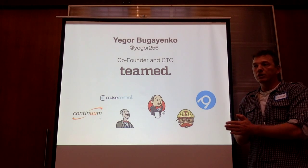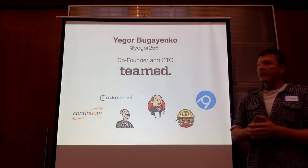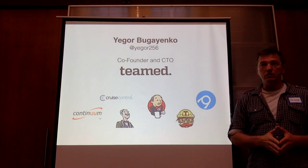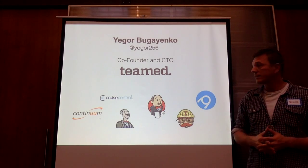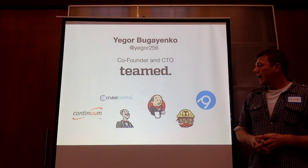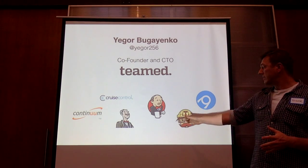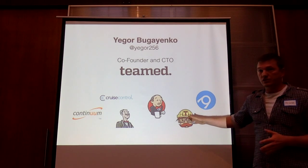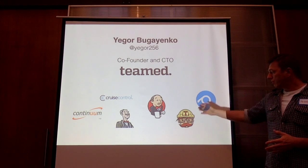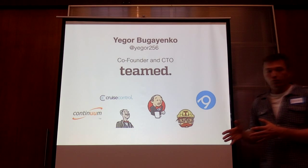We are very focused on continuous delivery and very frequent releases — we release many times a day. We've used different tools for continuous integration over the years: we started from Apache Continuum about five years ago, then tried CruiseControl, switched to Hudson, then Jenkins. About a year and a half ago we switched all our projects to Travis and AppVeyor. AppVeyor is the same as Travis but for Windows. We are active users of these two, but it still doesn't work like it should, according to my experience.